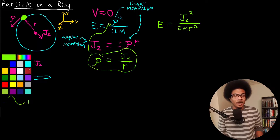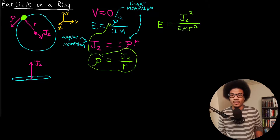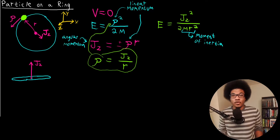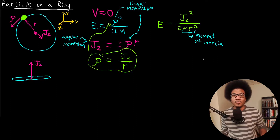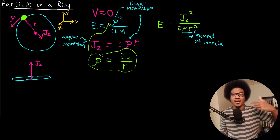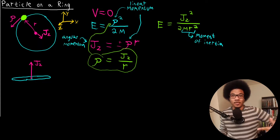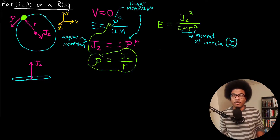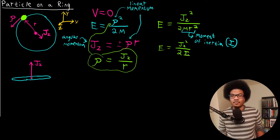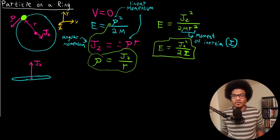One thing you might notice is the MR squared term — this is a physical quantity known as the moment of inertia. The moment of inertia is a really important quantity for a particle traveling in circular motion; it represents the amount of force necessary to accelerate the particle in a circle with a particular momentum. We usually use a capital letter I to denote the moment of inertia, so we can rewrite the energy expression as J_Z squared over 2I. This is classically the total energy of a particle on a ring.